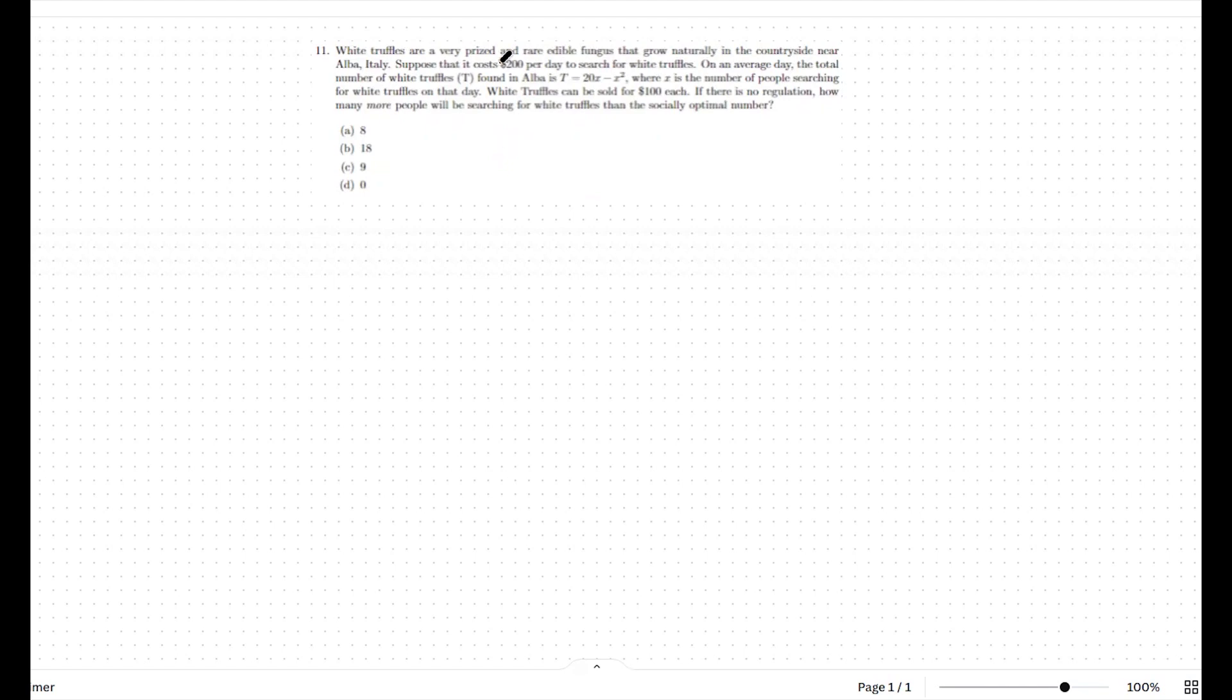In this case, we're given a $200 per day entry fee, which we'll write here. So there's $200 to enter. We also have a quantity equation of t equals 20x minus x squared. So the number of truffles that are hunted in this society is equal to 20 times the number of people that are hunting minus the number of people hunting squared. That's what this x number represents, is the number of people. And then we also know that truffles can be sold for $100 each. So that's our price on the market.